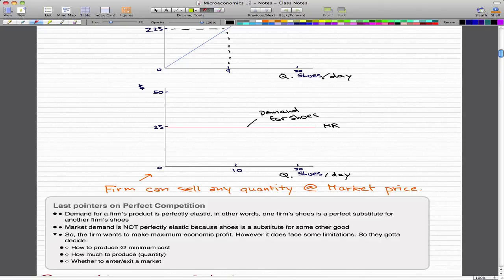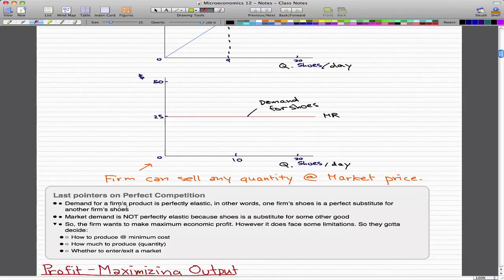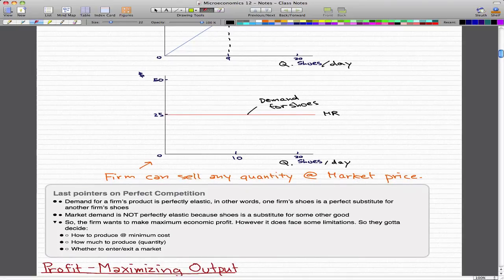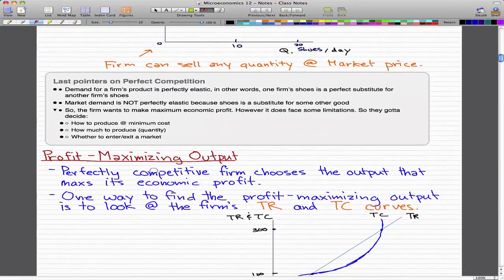The firm wants to make economic profit; however, it does face some limitations. Here are some things they have to decide: how to produce at minimum cost, how much to produce (the quantity), and whether to enter or exit a market. We start by looking at a firm's output decision.